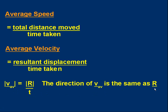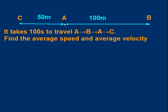Let's do an example to illustrate this. Suppose you've got point A. 100 metres to the right of it is point B, and 50 metres to the left of point A is C. Let's say it takes 100 seconds to travel from A to B, then back to A, and then on to C. That's three displacements: we've gone from A to B, from B to A, and then from A to C. We want to work out the average speed and the average velocity. This is a good opportunity to do some thinking for yourself — pause the video and try to work this out.